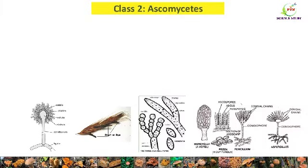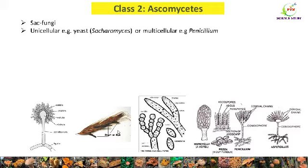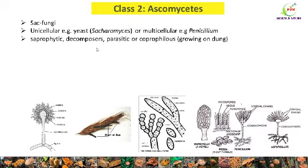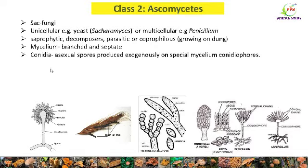The next class is Class 2 — Ascomycetes, also commonly known as sac fungi. Some members of Ascomycetes are unicellular, such as yeast, while some are multicellular — a common example is Penicillium. These fungi are saprophytic, decomposers, parasitic, or coprophilous, meaning growing on dung. In Ascomycetes, the mycelium is branched and septate. Conidia are produced by members of Ascomycetes — these are asexual spores produced exogenously on a specialized mycelium called the conidiophore.